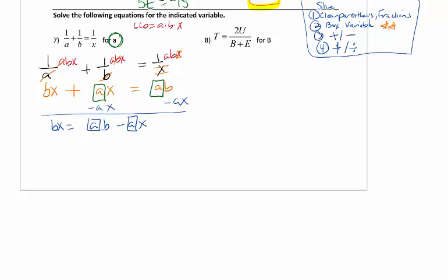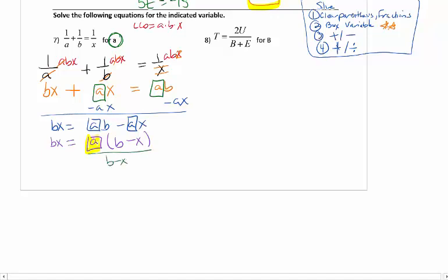We can't add them together because they're not like terms, but I want to get A by itself. So I can actually use the distributive property to isolate the A, which is in the box. So I'm going to isolate it by pulling it out using the distributive property, factoring it out. And now my goal is to get this box by itself. So I can divide both sides by the B minus X to get my answer. So my answer is A equals BX over B minus X.